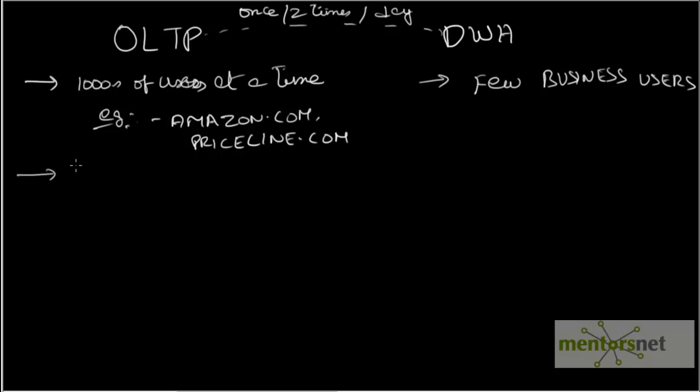OLTP is optimized for transaction processing and data warehouse is optimized for analytical processing. The kind of queries we run in transaction processing is basically trying to book one ticket in Priceline.com or trying to buy a book from Amazon.com. Lot of users are parallelly connected to Amazon.com or Priceline.com, but each of them is interested only in buying a book at a time or buying a ticket at a time.